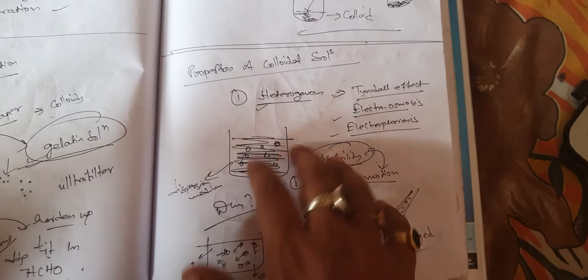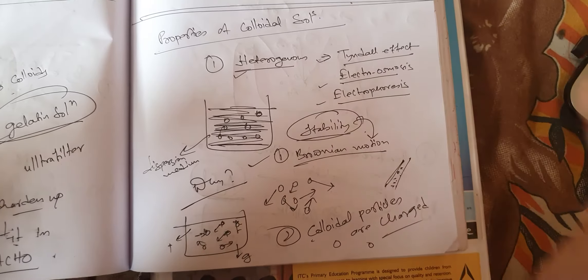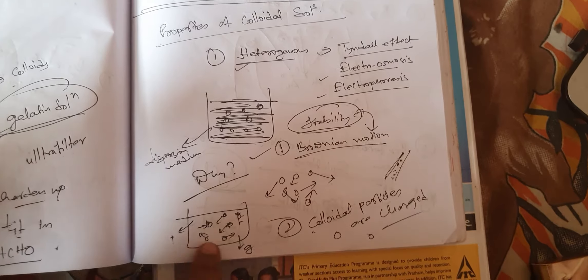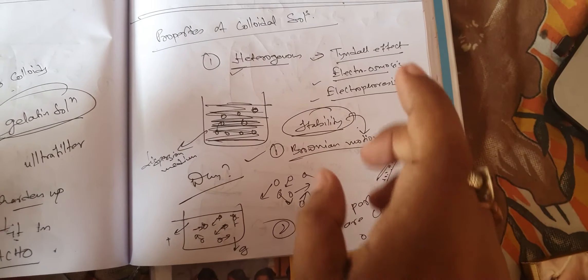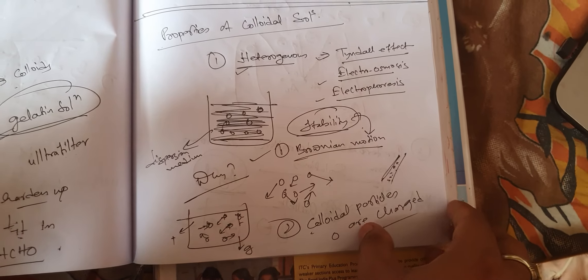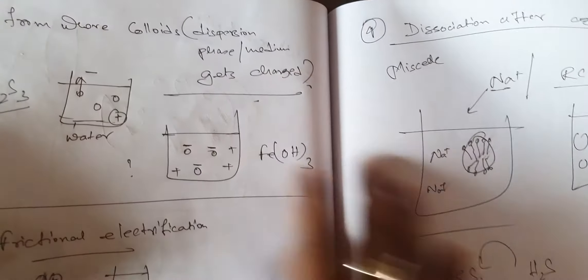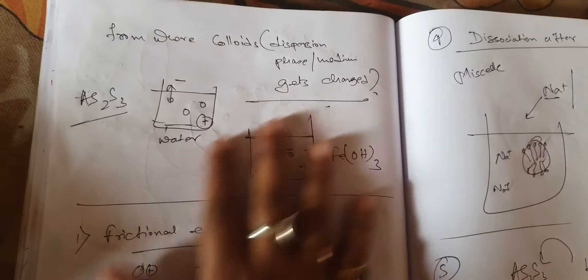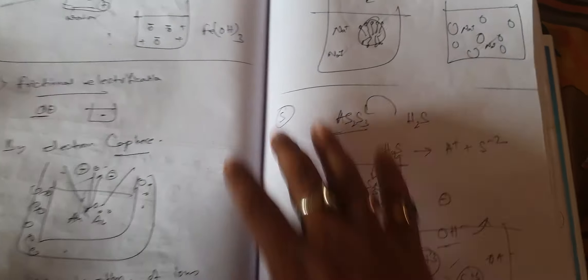To summarize the properties covered: colloidal solutions are heterogeneous, confirmed by electroosmosis, electrophoresis, and Tyndall effect. Stability exists because of Brownian motion — which nullifies gravity — and because colloidal particles are similarly charged, causing mutual repulsion. The various methods by which colloids become charged have been discussed. Now, since colloids are charged, electroosmosis and electrophoresis can be performed on them.